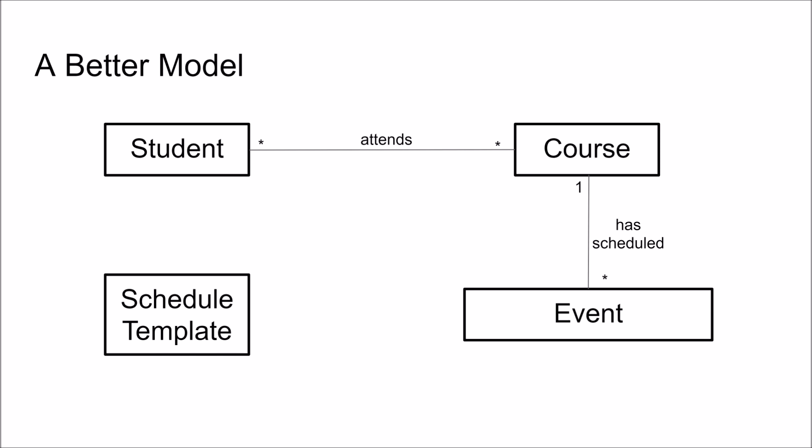This leads us to a domain model that looks something like this. A student — we need to know the courses the student attends and the events that are scheduled for that course, in order to show a schedule for that student. Now the domain model actually supports the requirements; it does not simply reflect them. The schedule template is somewhat of a free-floating class here, and that's not a problem. In the requirement of viewing a schedule, a student needs to select a template — this is just a temporary thing, not something we need to remember over time. So there will probably not be a need for any associations in this case. We also do not need to add the admin actor here, as we don't need to remember that the admin has changed the schedule.